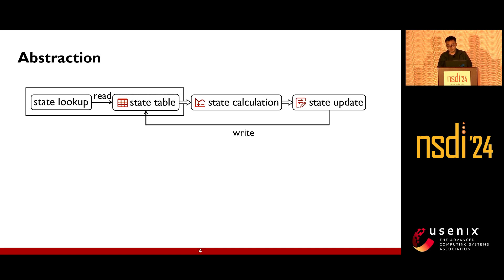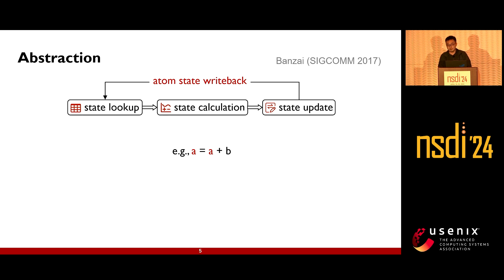Typically, stateful network functions based on the extended finite state machine abstraction can be broken down into three primary phases: state lookup, state calculation, and state update. The initial phase focuses on accessing the current state, and the last phase is dedicated to modifying the state. In Banzai's implementation, these three phases are combined into atomic operations that form part of the pipeline.